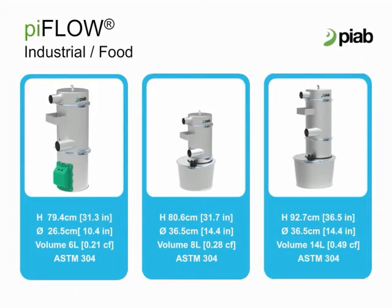This slide shows the conveyor volume capacity for the PIFLOW INF. The volume numbers 6, 8, and 14 denote the amount of product the PIAB can hold per batch cycle — basically, the larger the volume, the greater the flow capability. Other critical factors that determine convey rates are transfer line size and pump size. Larger line size and higher flow pumps will fill the receiver faster, adding up to greater volume of product per hour.